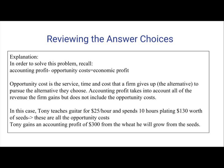Accounting profit takes into account all of the revenue the firm gains, but does not include the opportunity cost. In this case, Tony teaches guitar for $25 per hour and spends 10 hours planting $130 worth of seeds. These are all the opportunity costs. Tony gains an accounting profit of $300 from the wheat he will grow from the seeds.